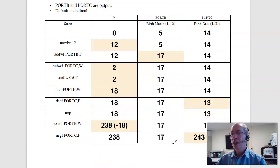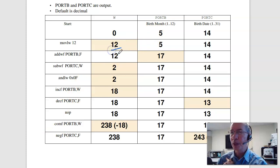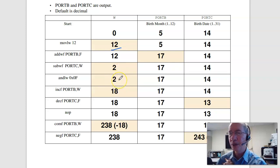Problem 3: find the content of the registers after each instruction. The first instruction moves 12 to W, so W becomes 12. Add port B to W: 15 plus 12 is 17 — put the result in port B (comma F). Subtract W from port C: 14 minus 12 is 2 — put the result in W. Take W, do a logical AND with 0F to leave the low nibble bits alone — 2 becomes 2.